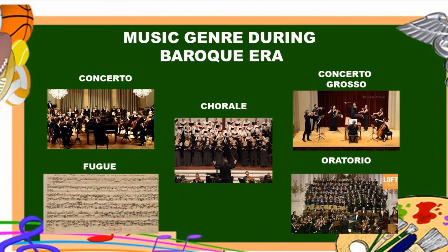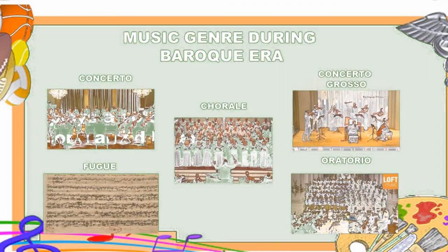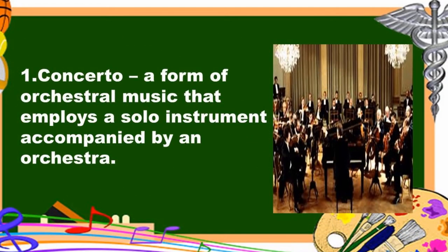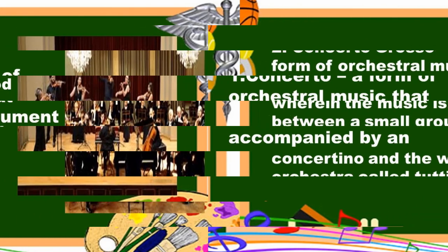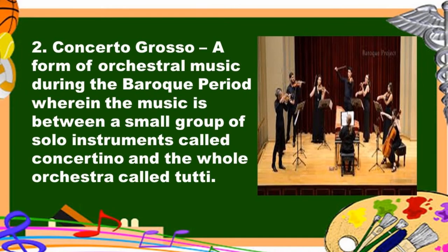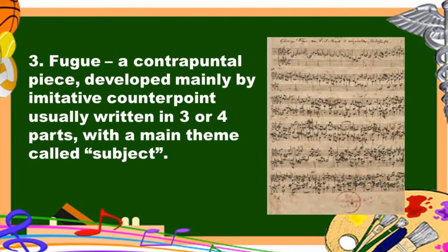There are some musical genres during the Baroque era: concerto, choral, concerto grosso, fugue, and oratorio. Concerto is a form of orchestral music that employs a solo instrument accompanied by an orchestra. Concerto grosso is a form of orchestral music during the Baroque period wherein the music alternates between a small group of solo instruments called the concertino and the whole orchestra called tutti. Fugue is a contrapuntal piece developed mainly by imitative counterpoint, usually written in three or four parts, with a main theme called the subject.